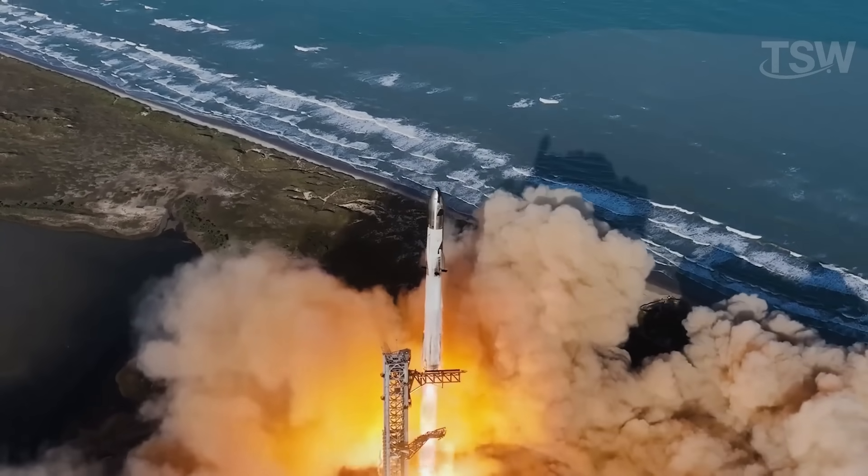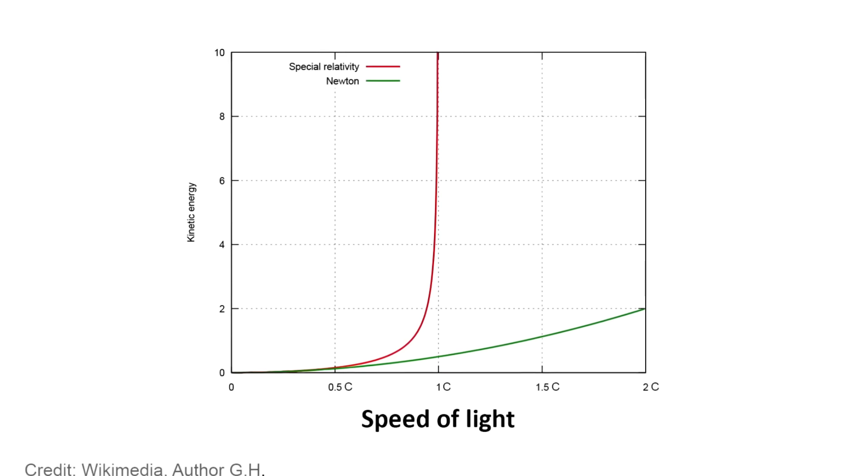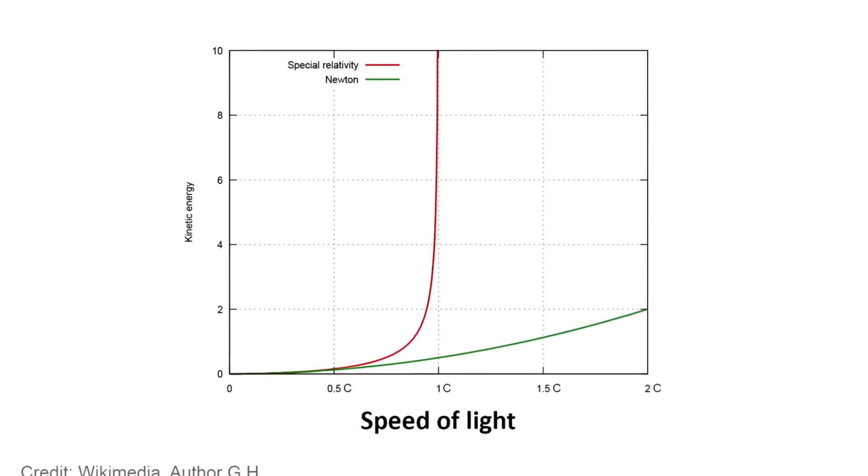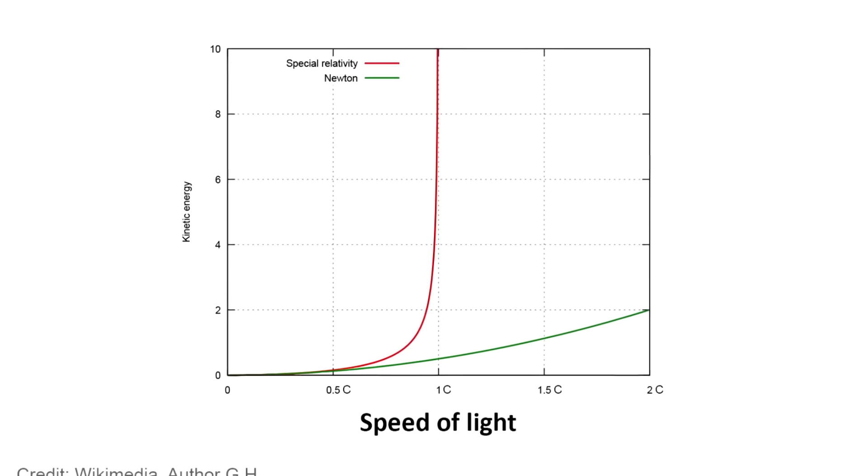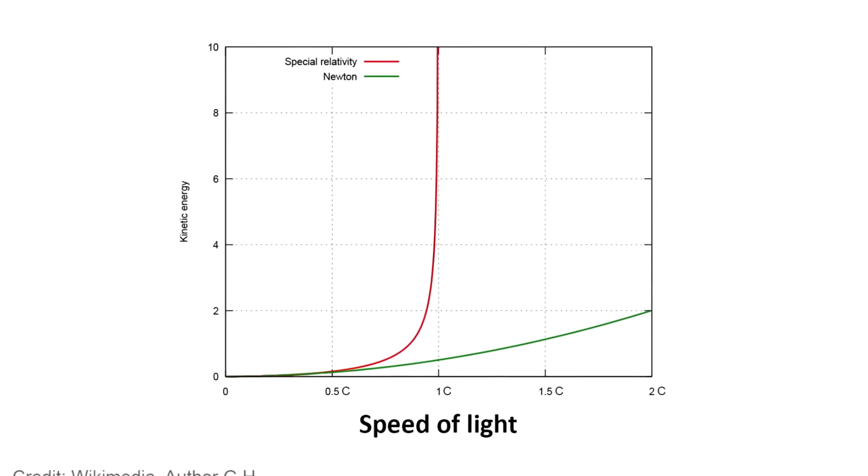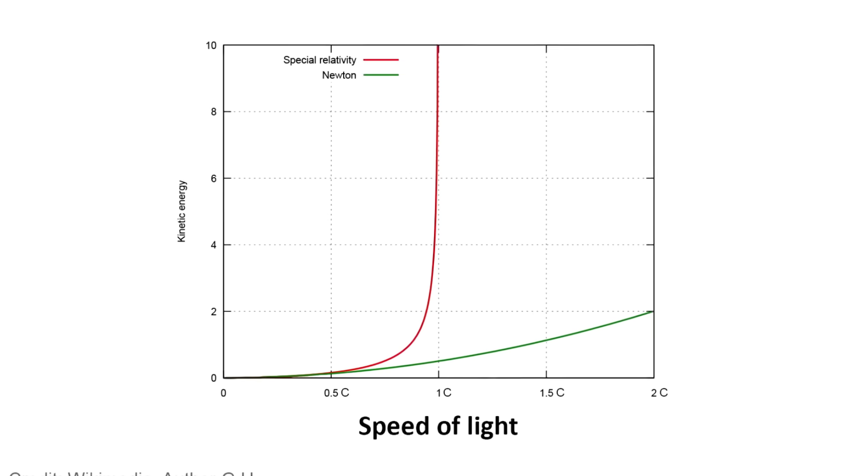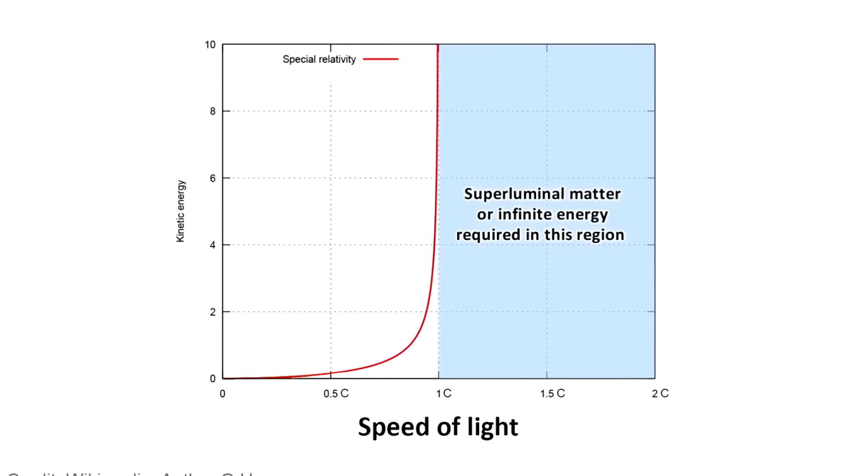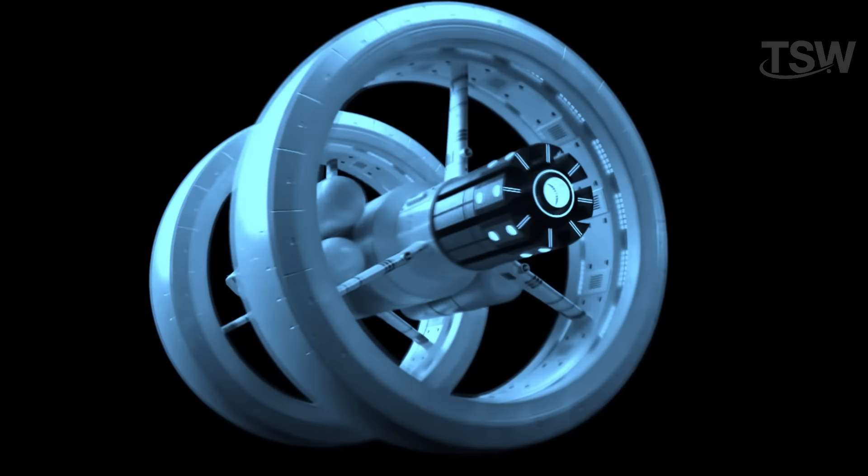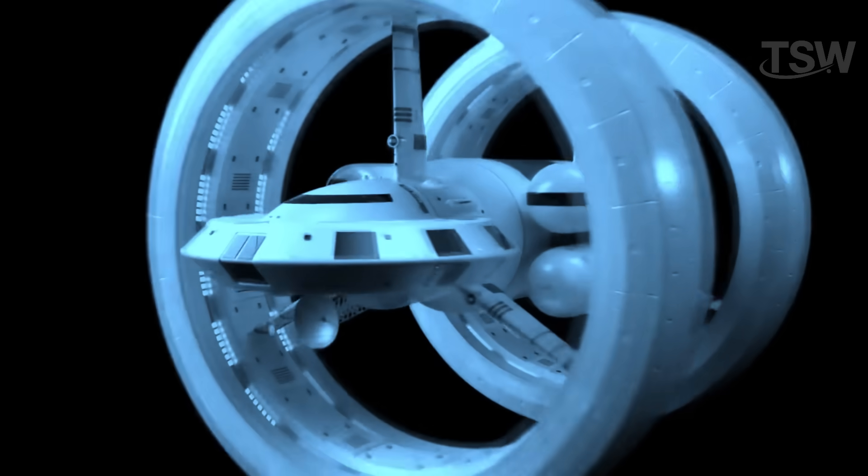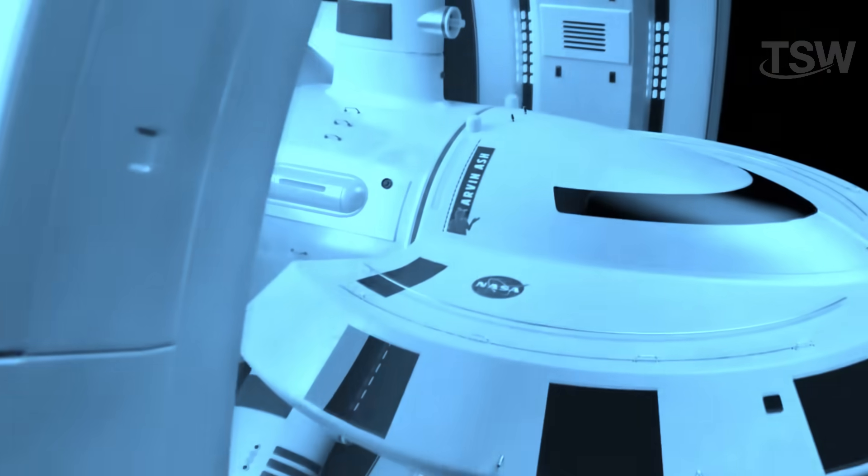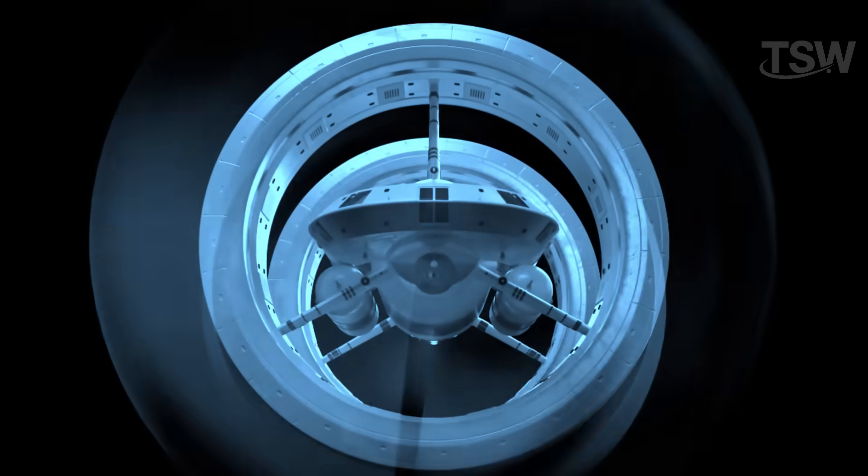The gases are expelled backward, propelling the spacecraft forward. But in the case of the warp drive, the push would be used to move the space bubble, not the ship itself. Theoretically, the moment you activate the warp drive, space ahead of the spacecraft would contract while space behind it expands. This process would form a kind of moving bubble of space. Inside that bubble, everything remains calm and untouched. No need to accelerate to extreme speeds.